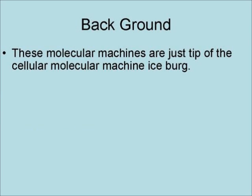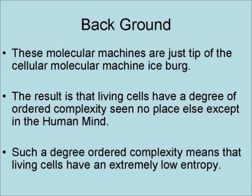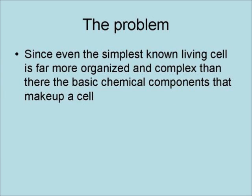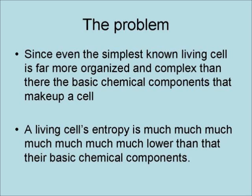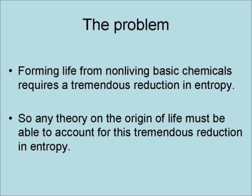These molecular machines are just the tip of the cellular molecular machine iceberg. The result is that living cells have a degree of order and complexity seen no place else except in the human mind. Such a degree of order and complexity means that living cells have an extremely low entropy. Since the simplest known living cell is far more organized and complex than the basic chemical components that make up a cell, a living cell's entropy is much, much lower than that of their basic chemical components.